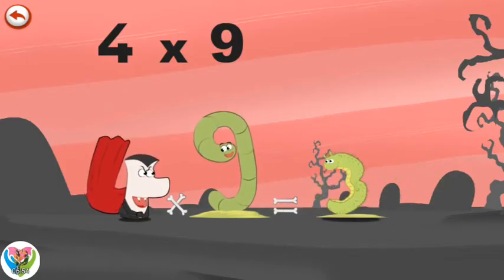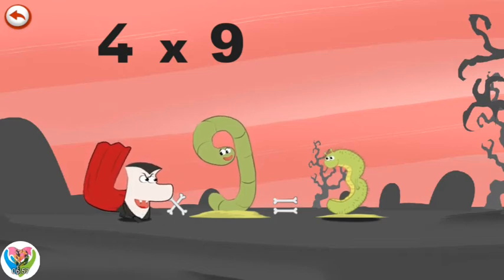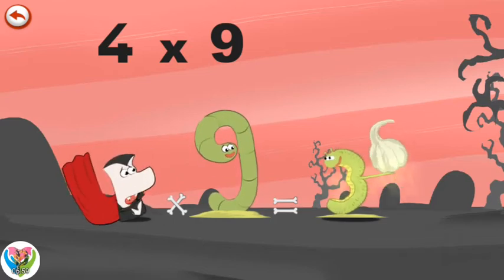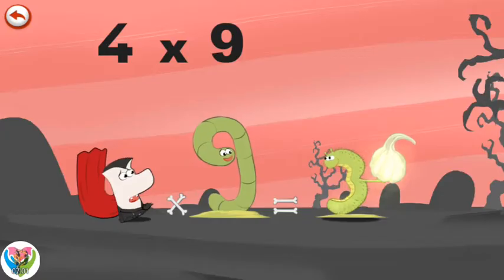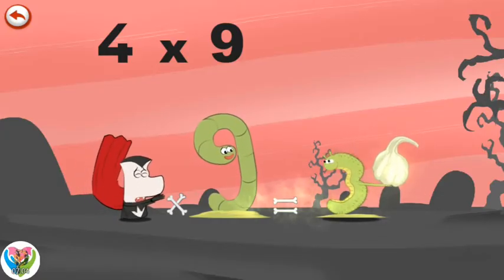The caterpillar, which is in the shape of a three, pulls out a clove of garlic in the shape of a six. Oh no, garlic. Like all vampires, Vamp 4 hates garlic.